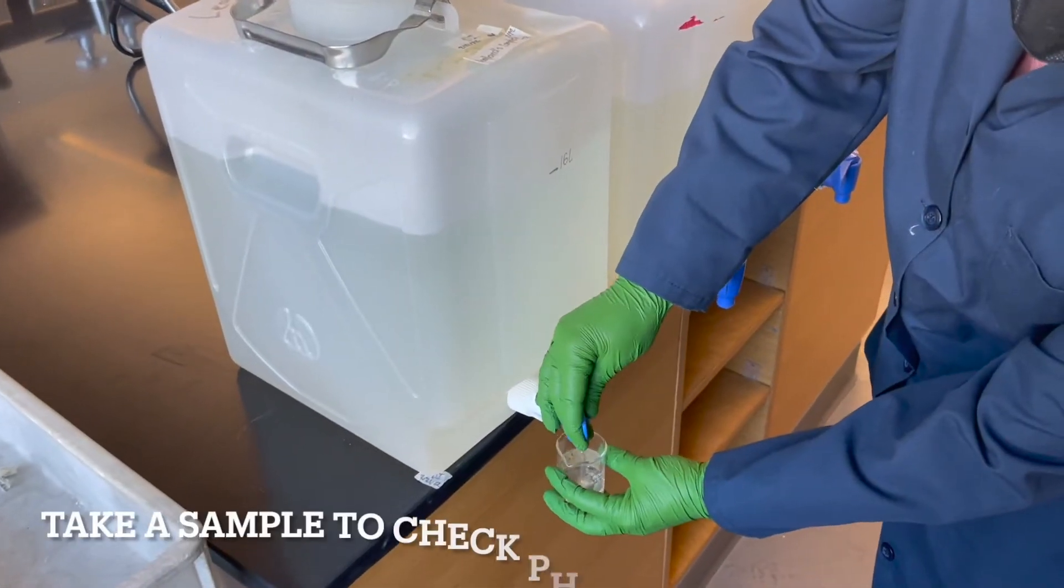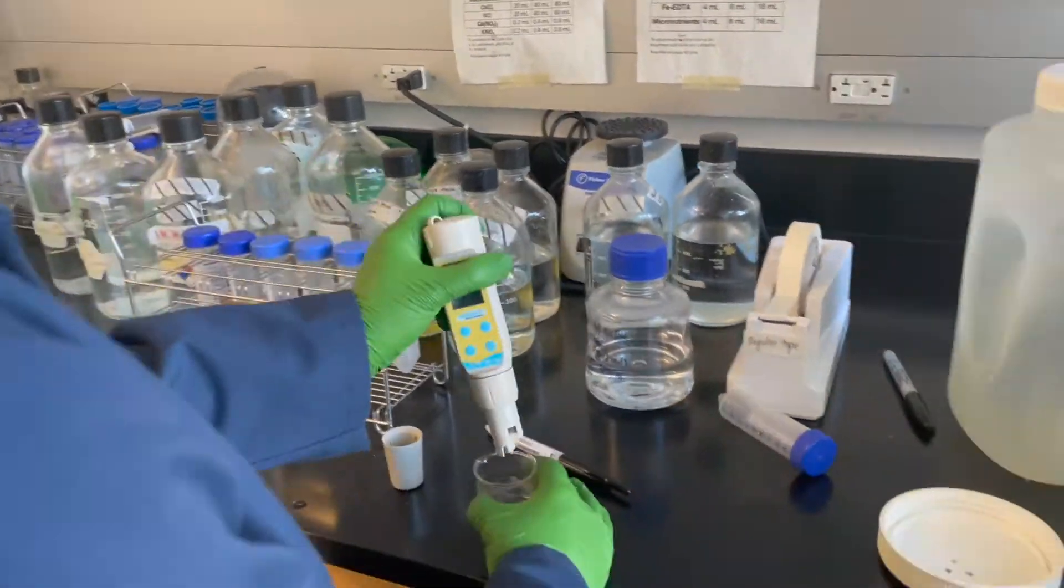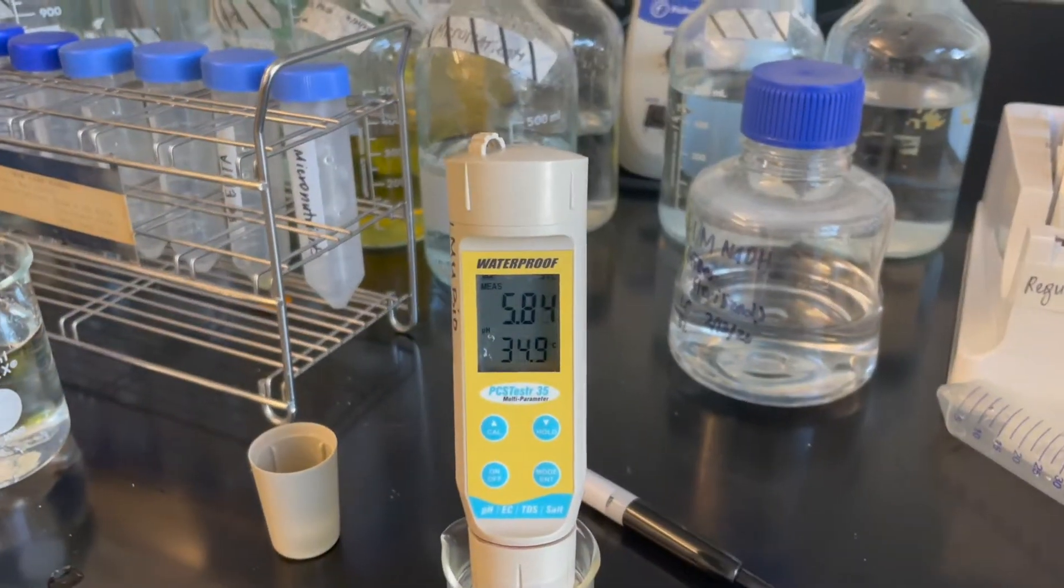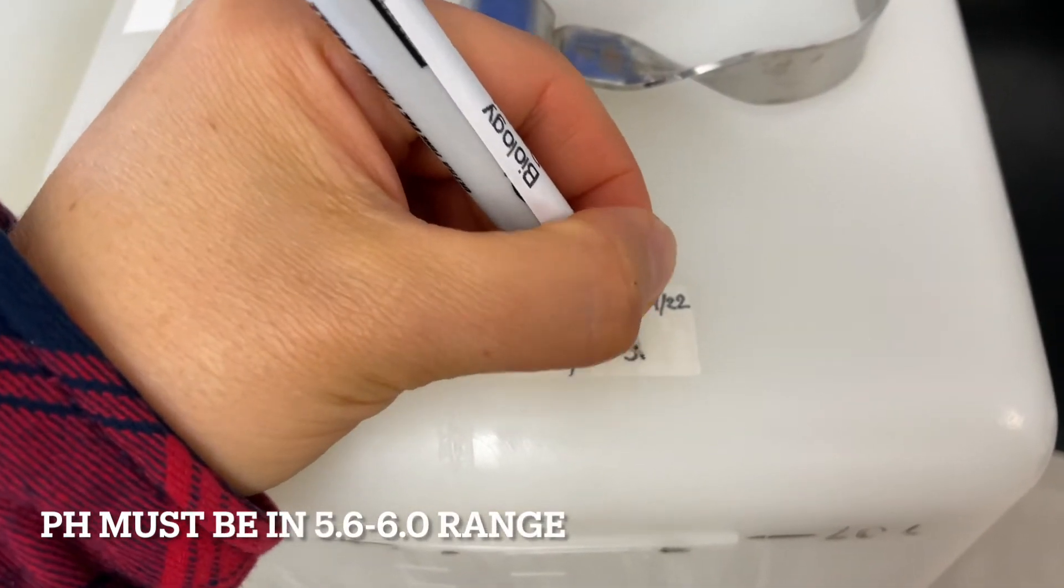The final step is a pH check. Drain some Hoagland's and use a pH meter to double-check the pH is within the range. Write down the pH and you're done. Don't forget to clean up.